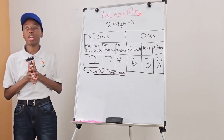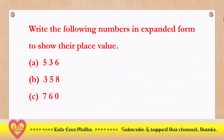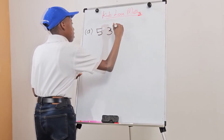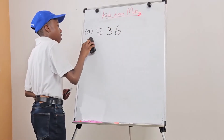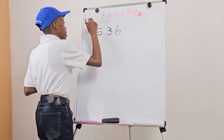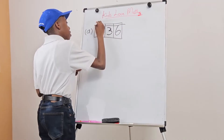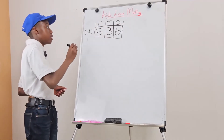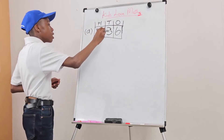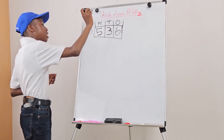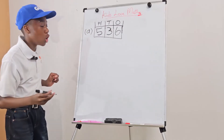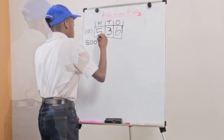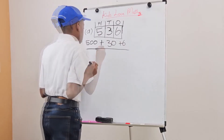I'll give an example and we will solve it together. The question is: write the following numbers in expanded form to show their place value. Number A is 536. Looking at the place value chart with ones, tens, and hundreds: 6 is in the ones place, 3 is in the tens place, and 5 is in the hundreds place. So the expanded form is 500 plus 30 plus 6.